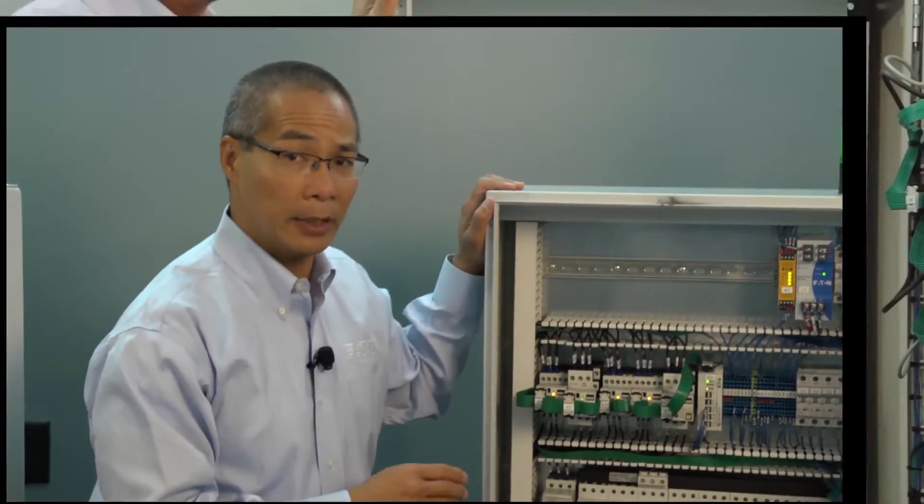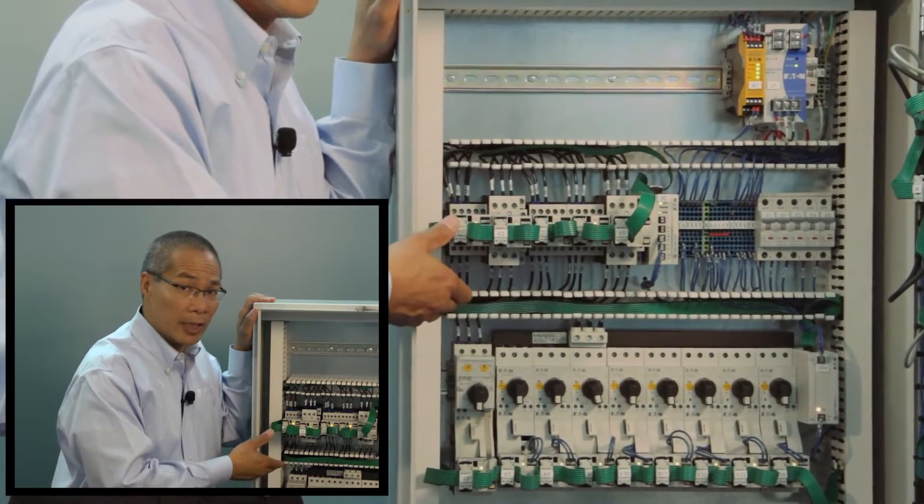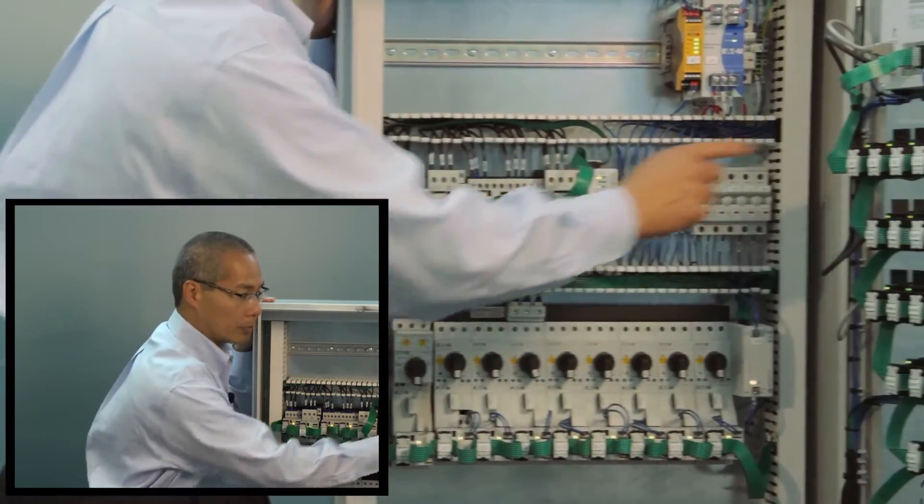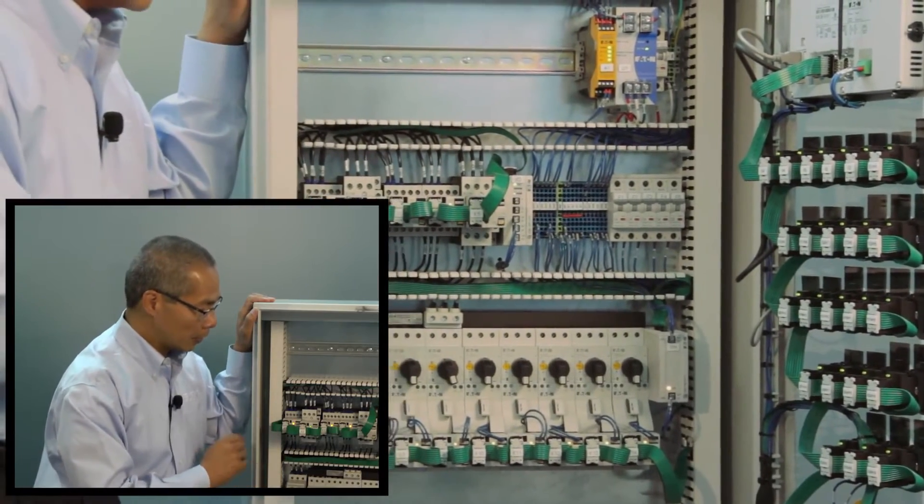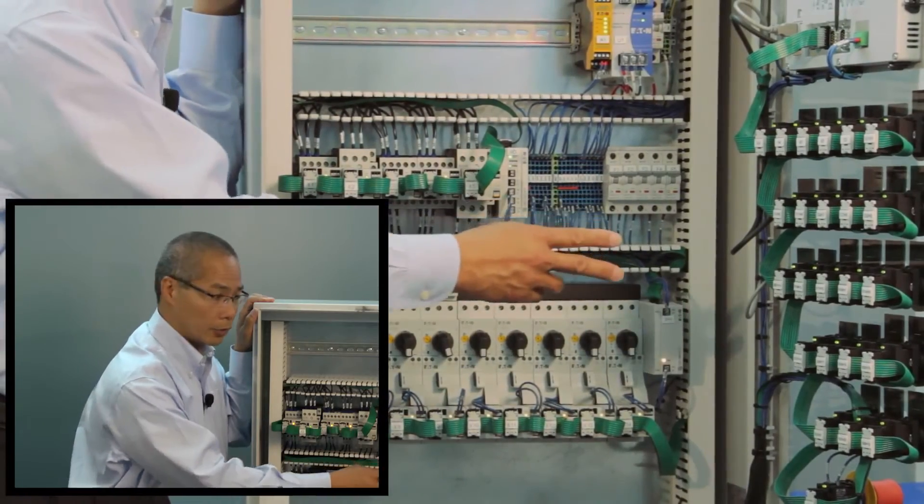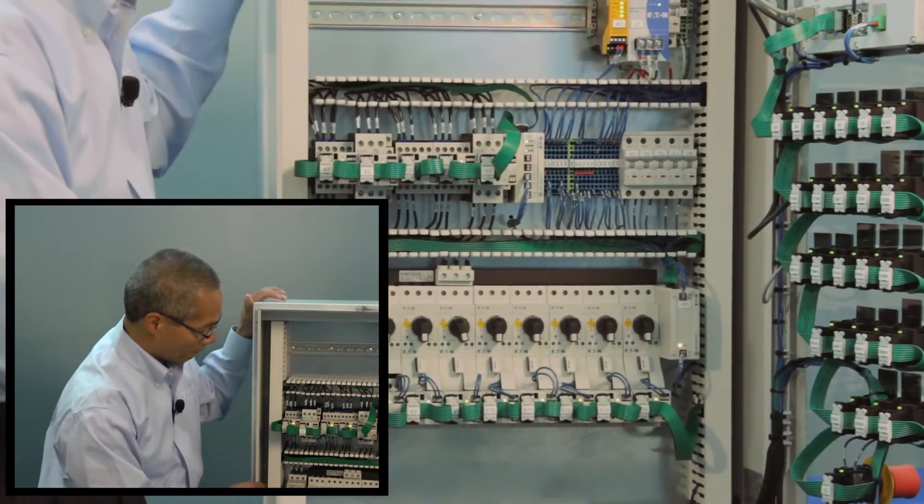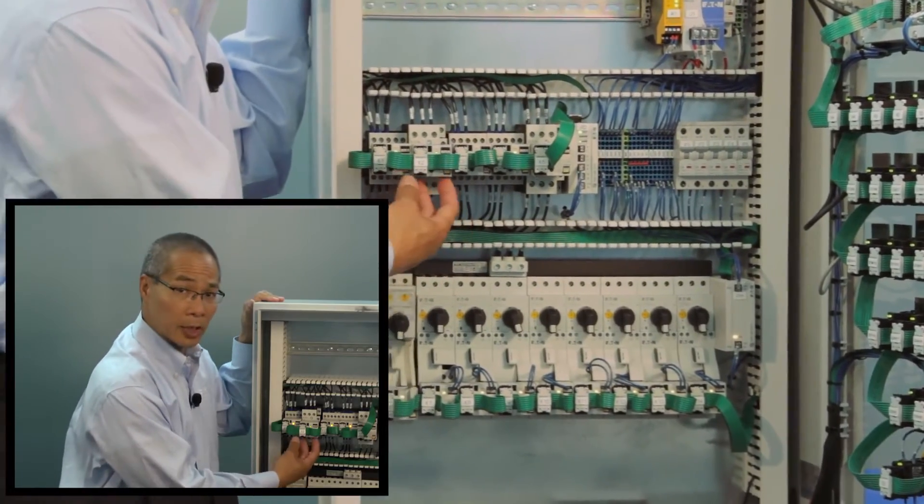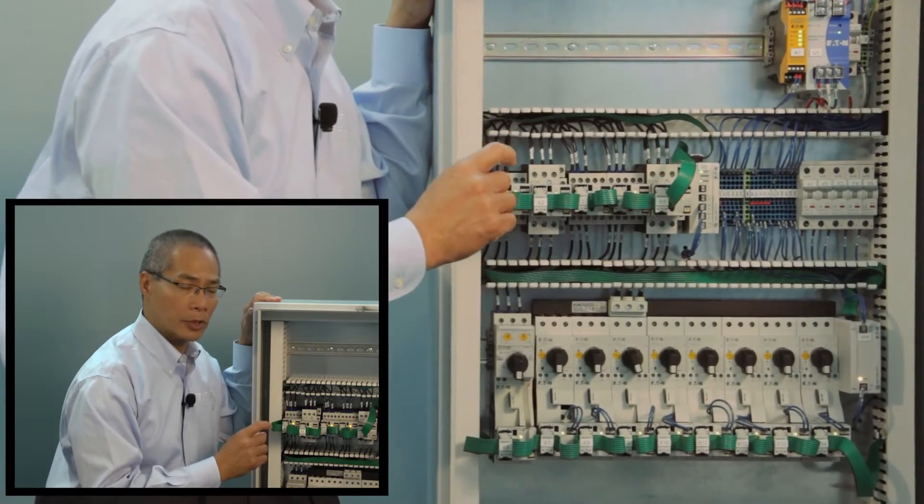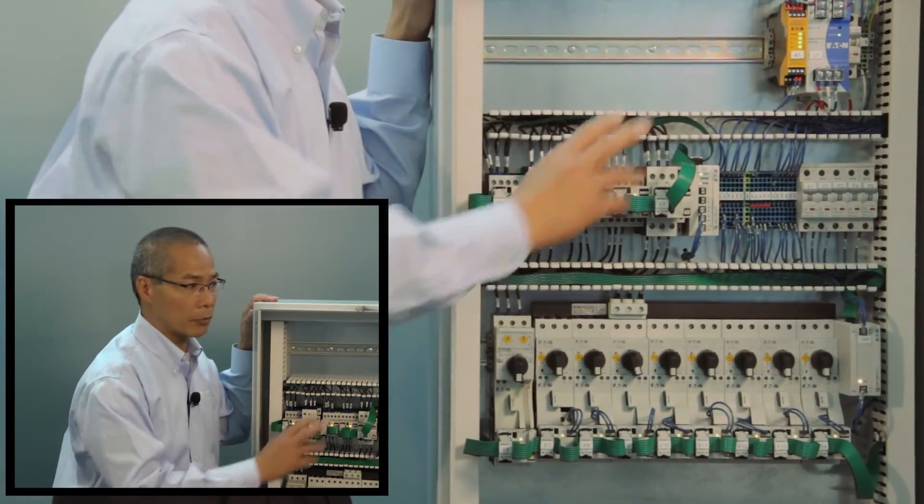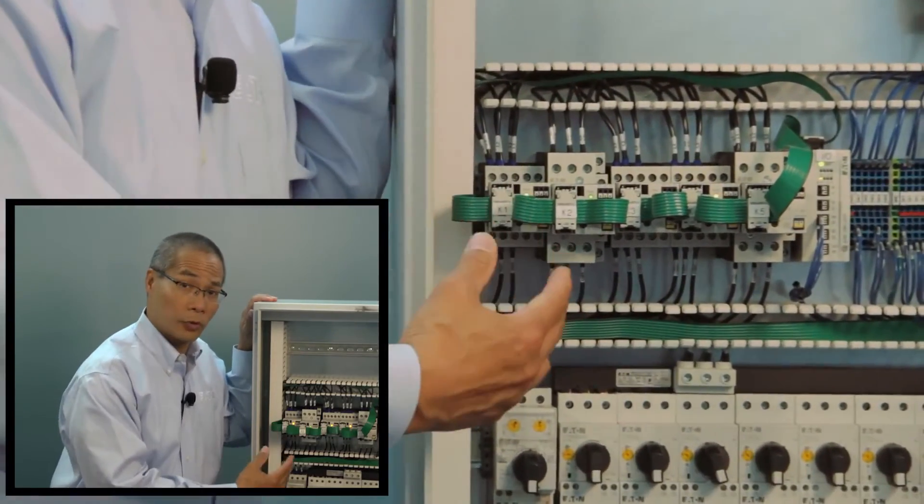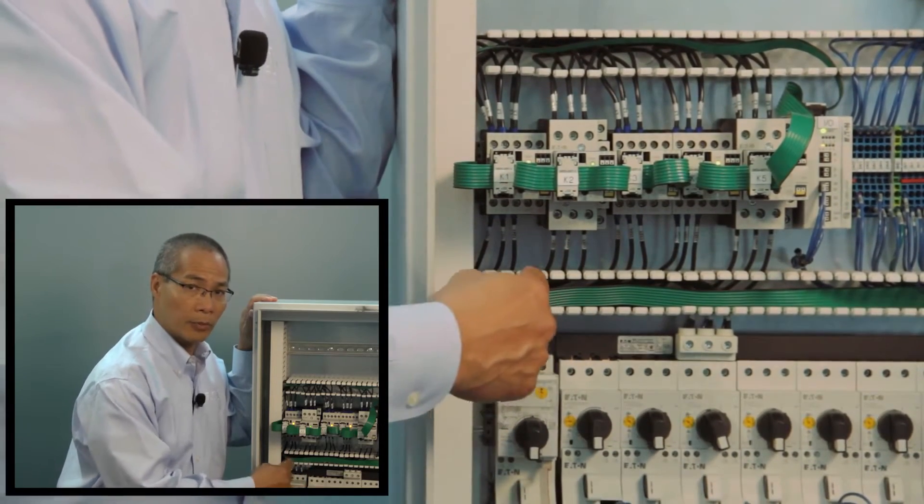As you can see, what SmartWire DT does is really essentially standardize the connections that it makes to all your components. We're using the same connector, whether it's attached to the contactor module or a push-button module. The other thing to notice is we're using still standard control components. The motor contactors that you see here and the pilot light devices on the door are all standard components. What's different is the module that sits on top of the contactor and the module that plugs into the back of the push-button unit. Inside those modules, we have a smart chip that allows us to make these components smart enough to talk directly to the HMI PLC. Essentially, that gives us basically a distributed I/O point down to each component device.